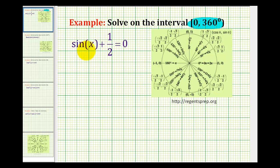So we'll start by isolating the trig function by subtracting 1/2 on both sides of the equation. So we have the sine of x equals negative 1/2. We want to determine which angles on this interval have a sine function value of negative 1/2.